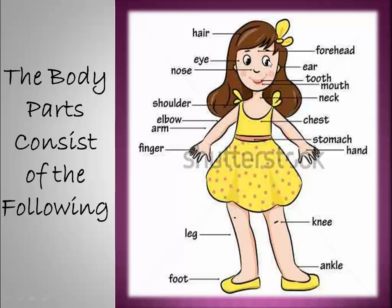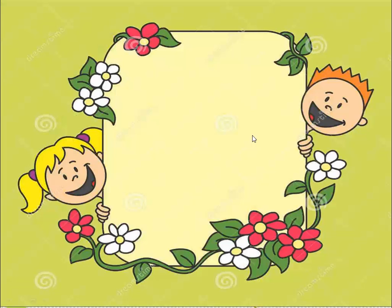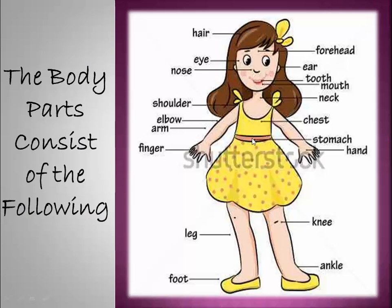Eyes. Ears. Nose. Mouth. The mouth has some teeth. And here comes the neck. Shoulder. Elbow. Arm. Finger. And this is the chest.